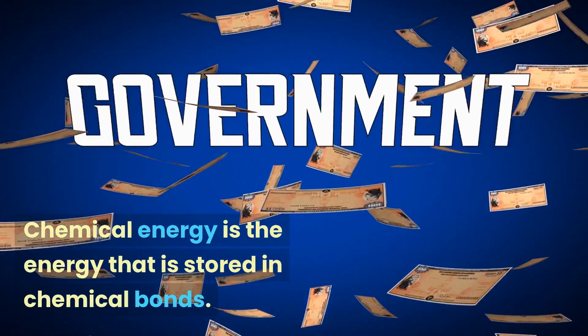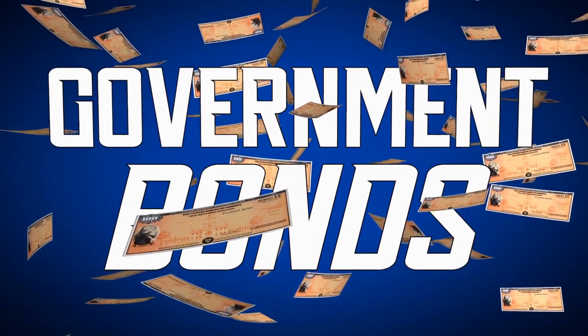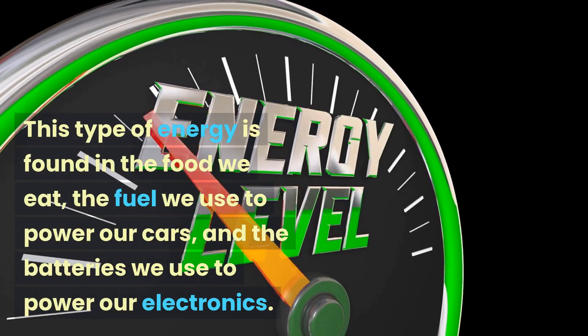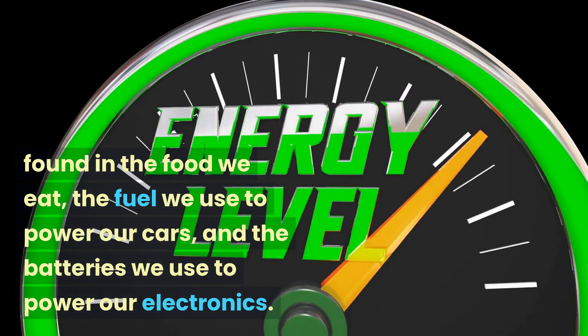Chemical energy is the energy that is stored in chemical bonds. This type of energy is found in the food we eat, the fuel we use to power our cars, and the batteries we use to power our electronics.